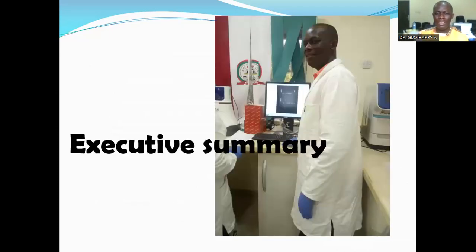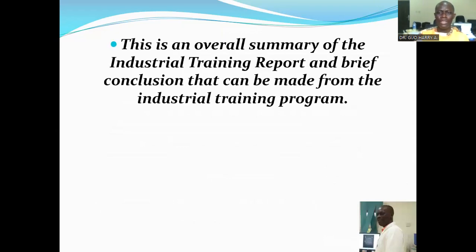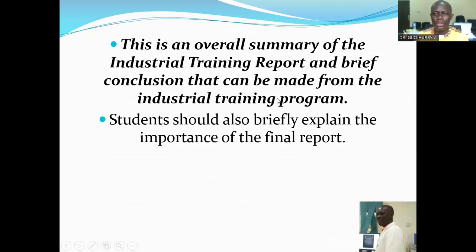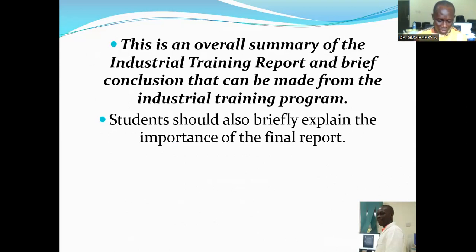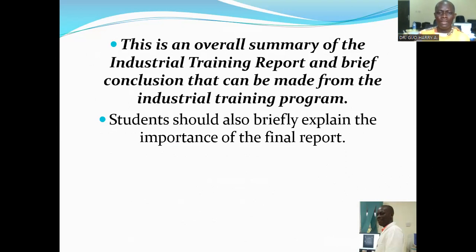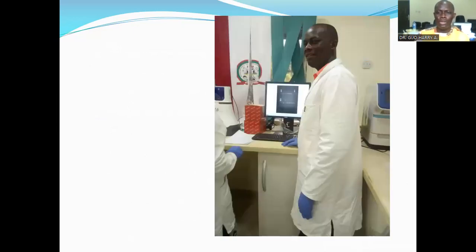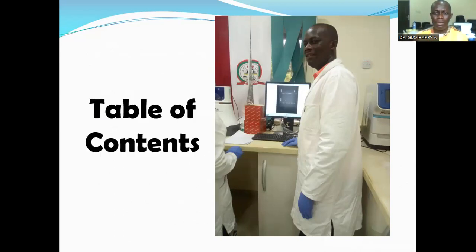The acknowledgement should not exceed one page. The next content is the executive summary. The executive summary of the industrial training report should be very brief — it should have a brief report of the industrial training, a conclusion on the report from the industrial training program, and the student should also write a brief explanation of the importance of the final report.